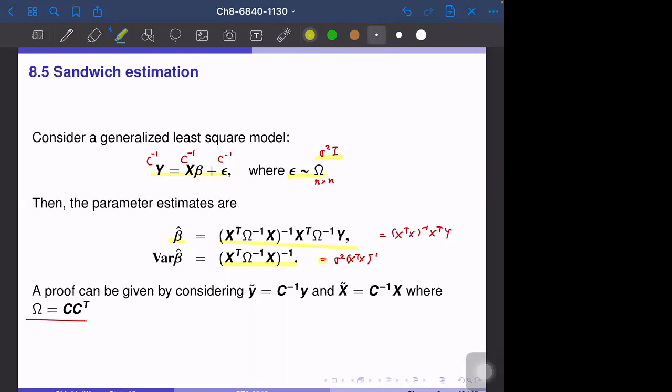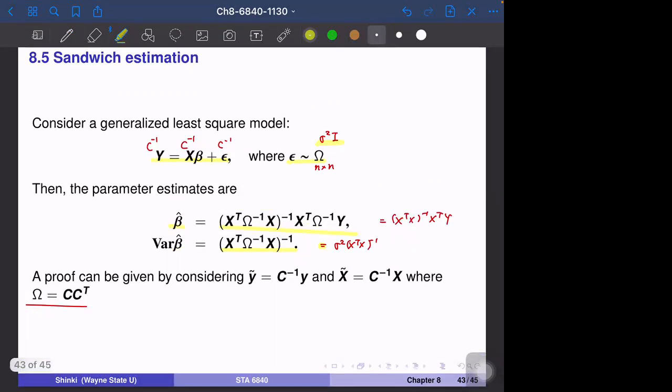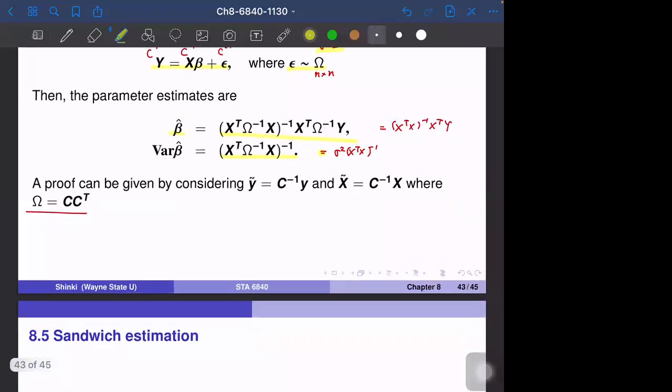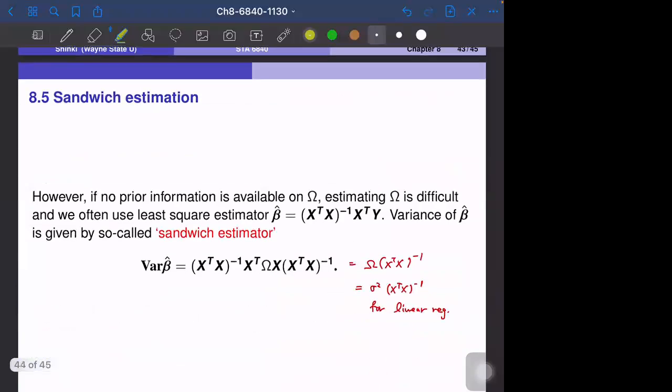But in some cases we cannot apply this. Maybe omega is a very large matrix, so omega inverse is not realistic to calculate. In this case we can use the sandwich estimation. The idea is that we still use beta hat, even though this is not the best estimator. If the assumptions are violated, beta hat may not be the best estimator, but still beta hat has some good properties.